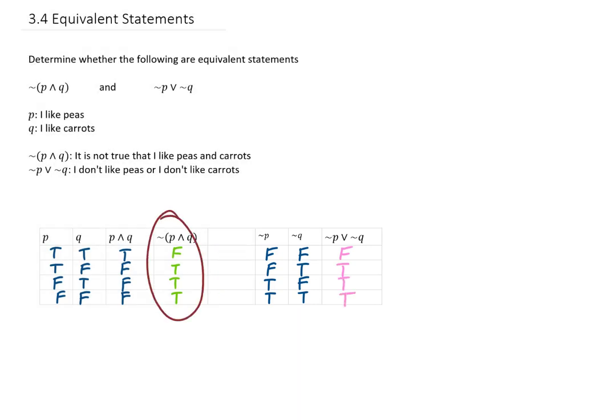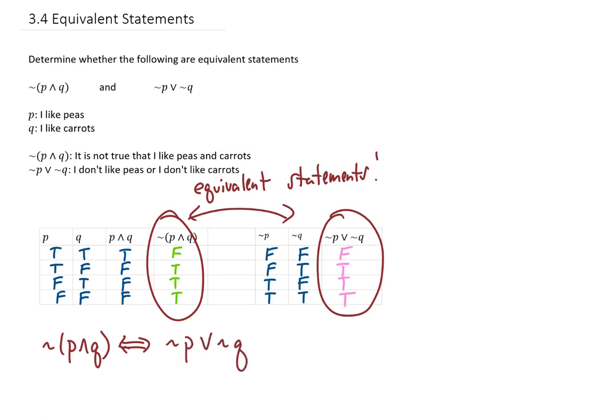Now notice that the truth values in the two answer columns for our two statements are exactly the same. That means that these two statements are equivalent. Now there's some notation for denoting equivalent statements and it looks like this. If you have two equivalent statements, you can say that they're equivalent by putting this little double arrow sign in between them.